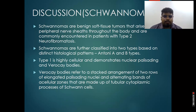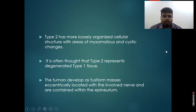Schwannomas are benign soft tissue tumors that arise from peripheral nerve sheaths throughout the body and are commonly encountered with neurofibromatosis type 2. On the basis of histological patterns, these are divided into Antoni type A and type B. Type A is highly cellular and demonstrates nuclear palisading and Verocay bodies. Verocay bodies refer to a stacked arrangement of two rows of elongated palisading nuclei and alternating bands of hypocellular zones made up of tubular cytoplasmic processes of Schwann cells. Type B are more loosely organized cellular structures with areas of myxomatous and cystic changes. It is often thought that type B represents degenerated type A tissue.